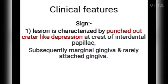The clinical features of ANUG: the lesions are characterized by punched-out crater-like depressions at the crest of the interdental papilla, and also present on the marginal gingiva.